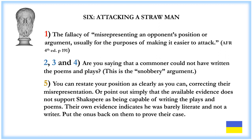Fallacy 6 is the fallacy of misrepresenting an opponent's position or argument, usually to make it easier to attack. Since the 19th century, the Stratford counter-argument has been: 'Are you saying that a commoner could not have written the poems and plays?' — known as the snobbery argument. To counter it, restate your position as clearly as possible, correcting their misrepresentation, or point out that the available evidence does not support Shakespeare as capable of writing the plays and poems. Their own evidence indicates he was barely literate and not a writer. Put the onus back on them to prove their case.